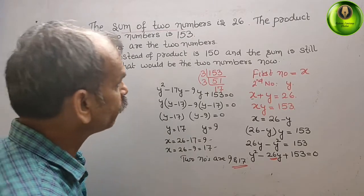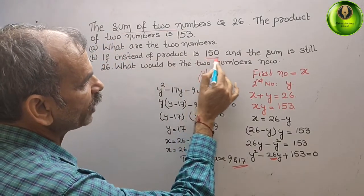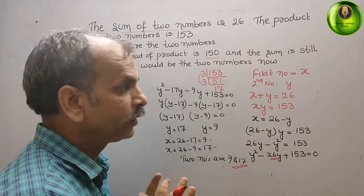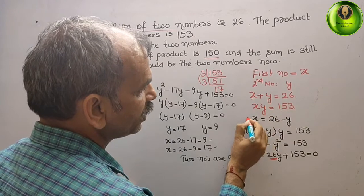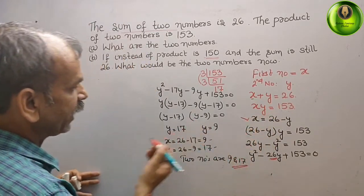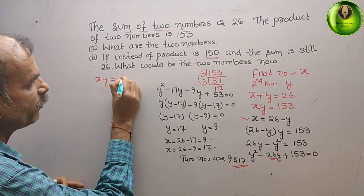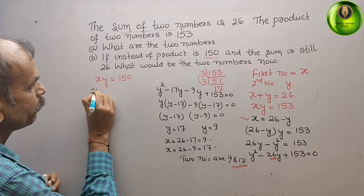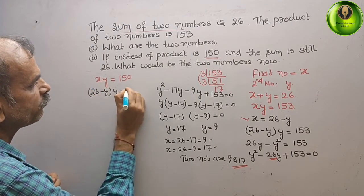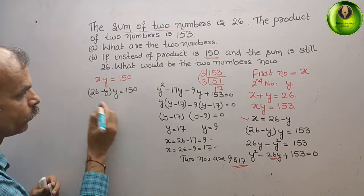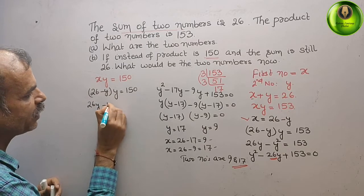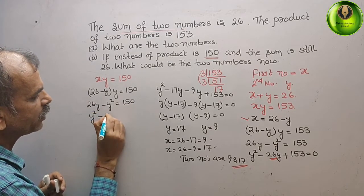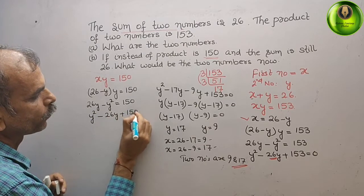Now for the second question: instead of 153 the product is now 150, and the sum is still the same. So XY equals 150. Substituting, we get (26 minus Y) times Y equals 150. Multiplying: 26Y minus Y squared equals 150. Bringing to one side gives Y squared minus 26Y plus 150 equals 0.